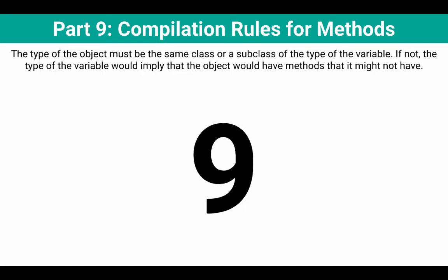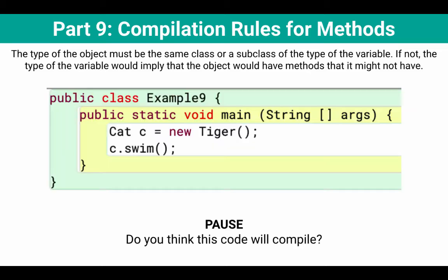Part nine, we have some compilation rules for methods. We're using the same learning goal as before: the type of the object must be the same class or a subclass of the type of the variable. And if not, the type of the variable would imply that the object would have methods that it might not have.